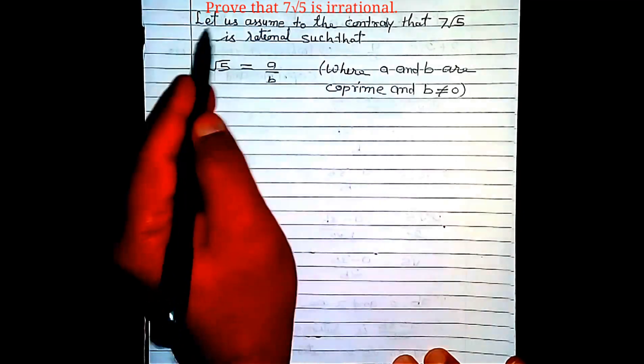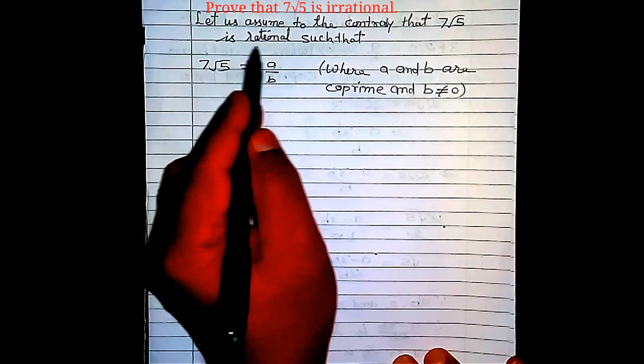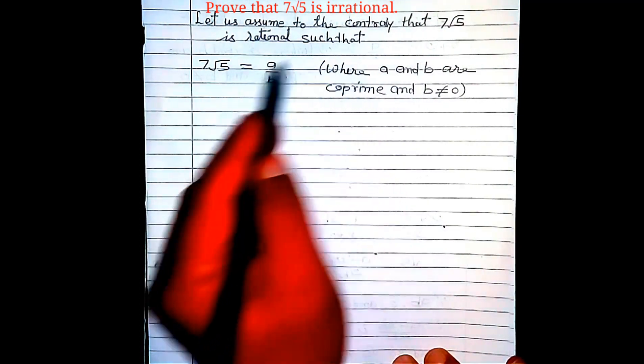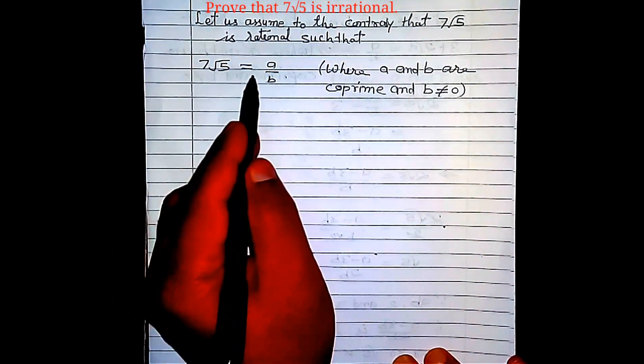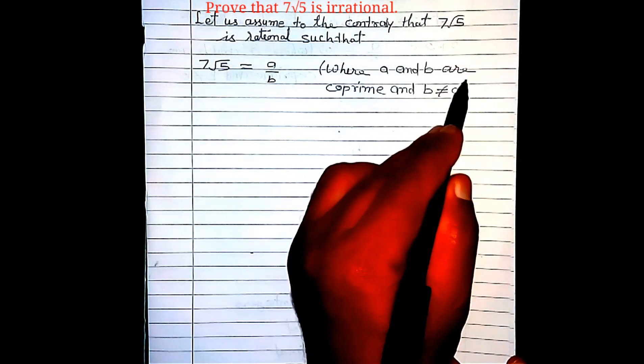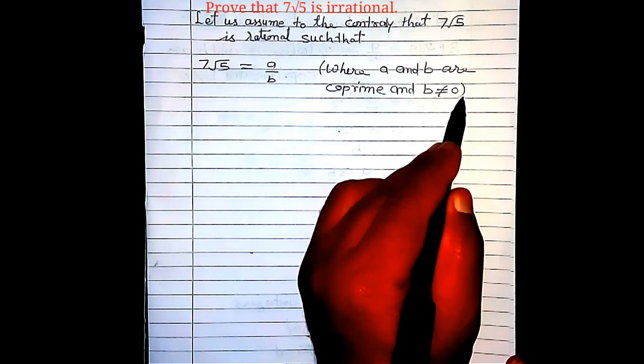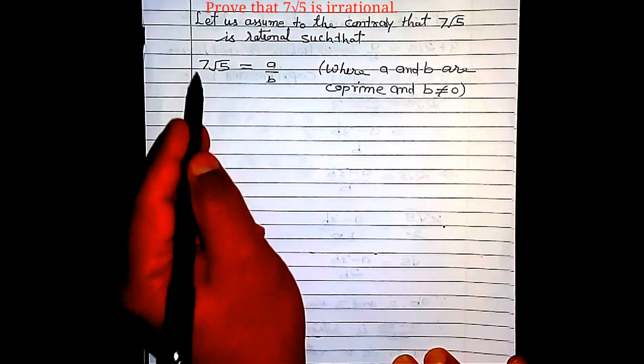So let us assume to the contrary that 7√5 is rational, such that 7√5 is equal to a/b, where a and b are co-prime and b is not equal to 0. This is an equation.